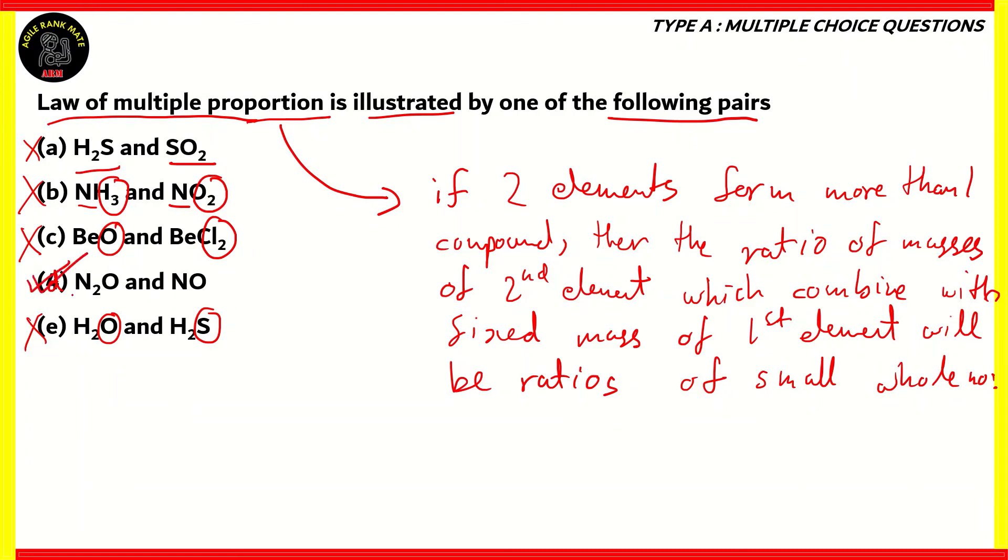The only option that is correct is N2O and NO. Now here, we have one oxygen atom in both compounds, so we have fixed mass of one element. The other element, which is nitrogen, has variable mass. However, if we look at the ratio of those masses, it will be 2 as to 1, which is ratio of small whole numbers. So option D is the correct option among the following in this question.